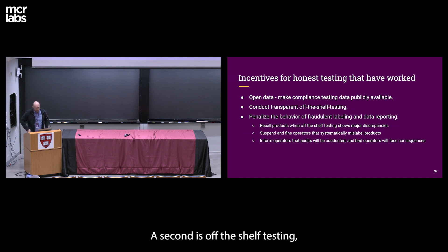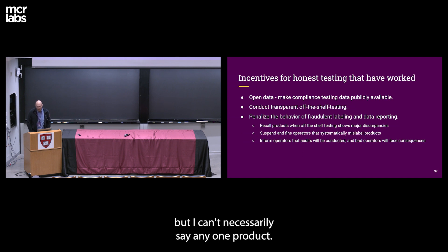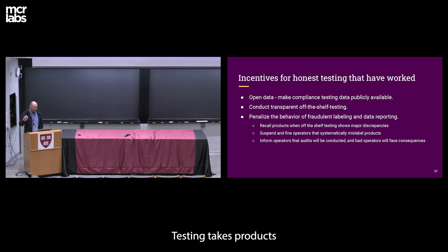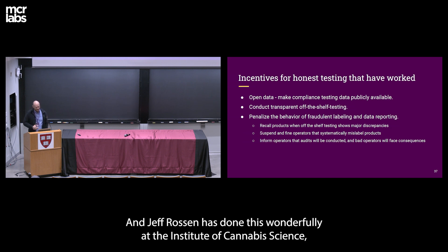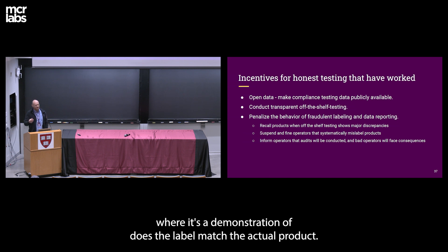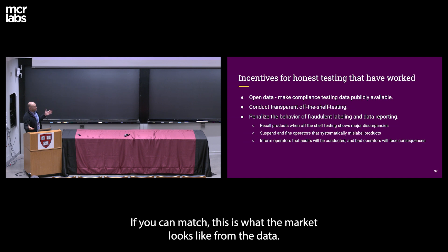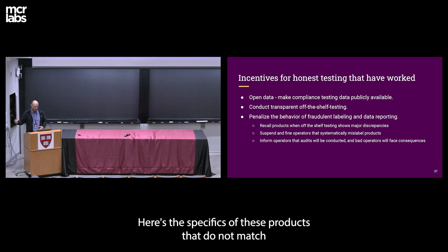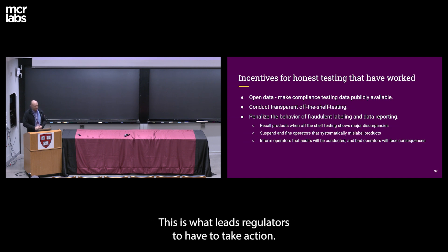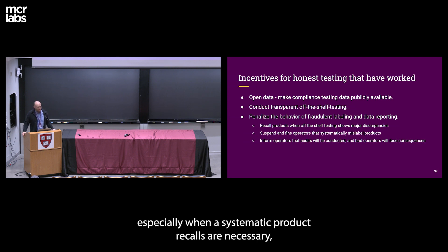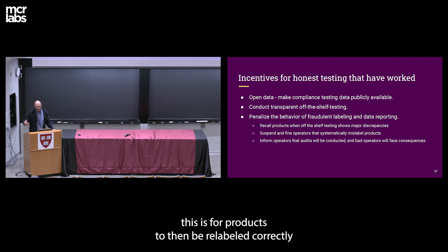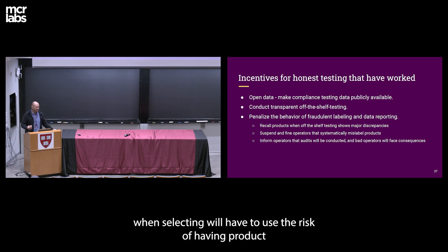A second solution is off-the-shelf testing. Looking at the data is like seeing the forest — it shows the general problem, but I can't say any one product is definitively manipulated. Off-the-shelf testing takes products and tests them, ideally at multiple labs. Jeff Rawson at the Institute of Cannabis Science does this wonderfully — demonstrating whether the label matches the actual product. This is what leads regulators to take action. Lastly, when products are found to be systematically mislabeled, product recalls are necessary — so that growers selecting labs must account for the risk of product recalls.